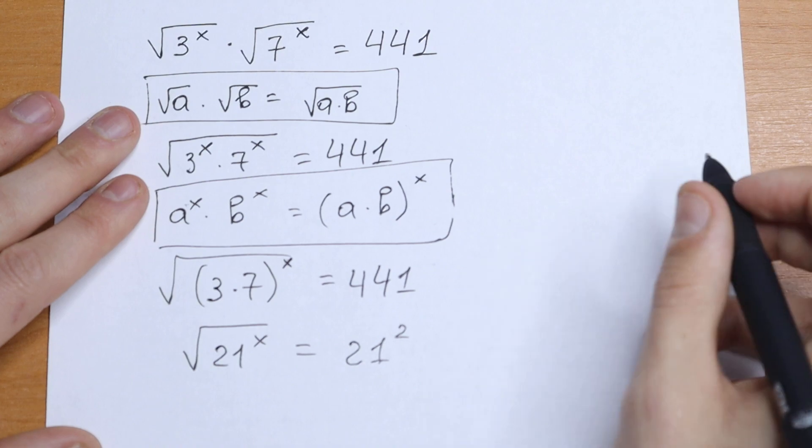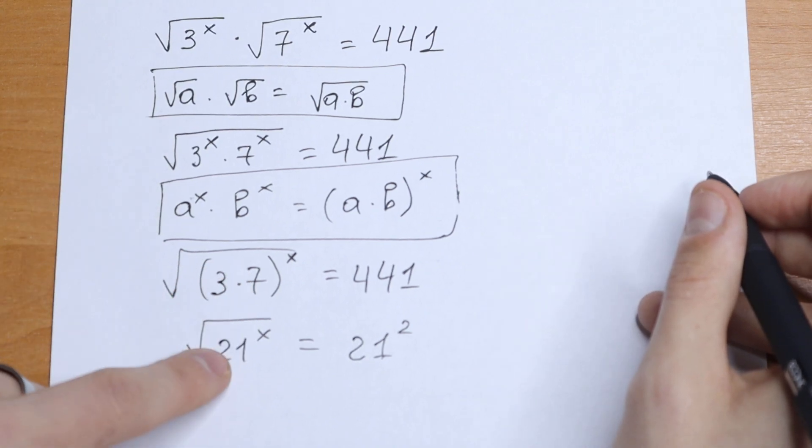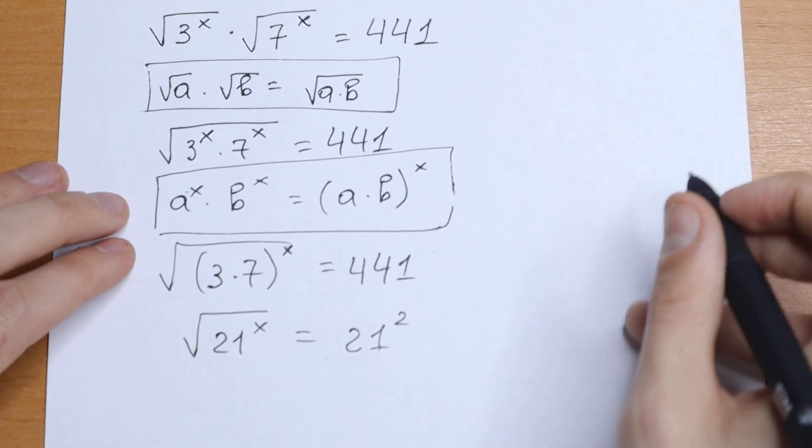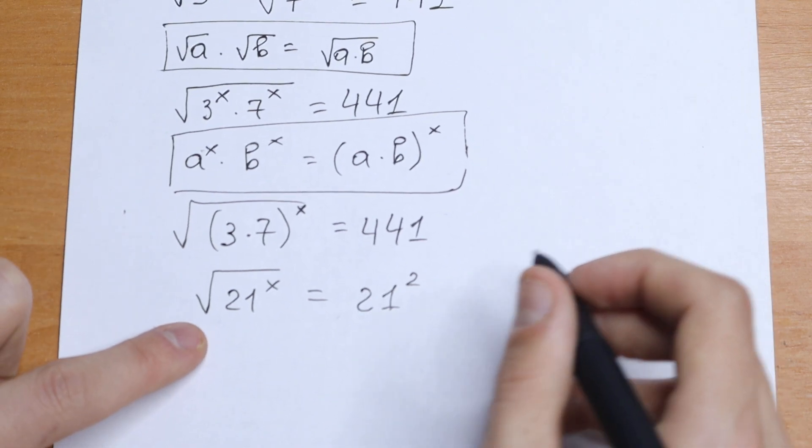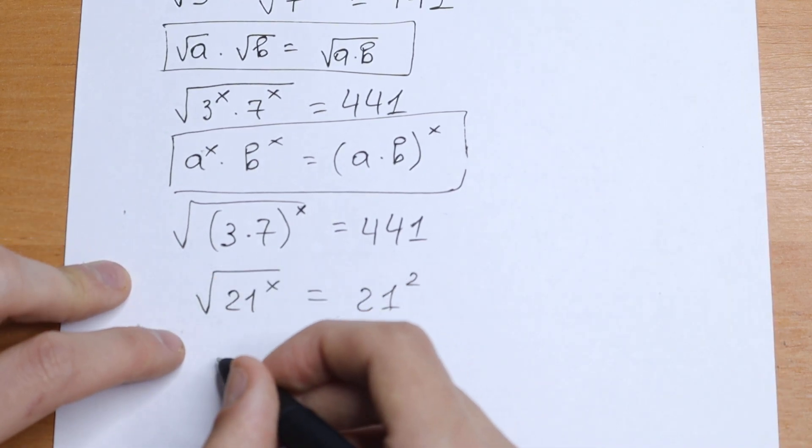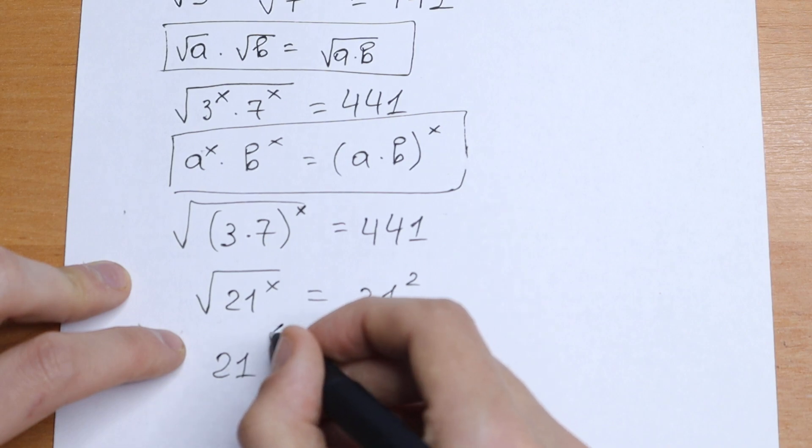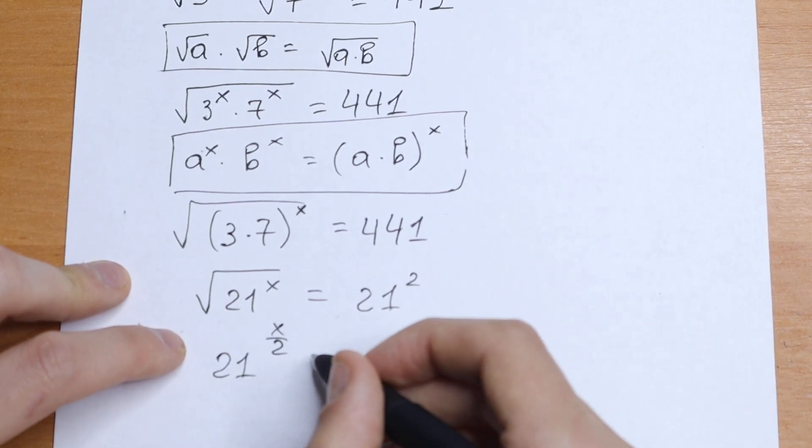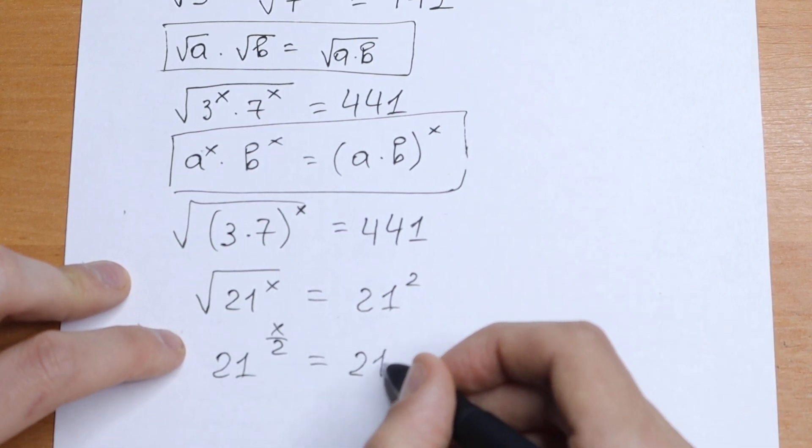And we will have an interesting case. We can create right here base of 21 and right here base of 21. We can write this 21 to the power x under square root sign as 21 to the power x over 2. And on the right we will have 21 squared.